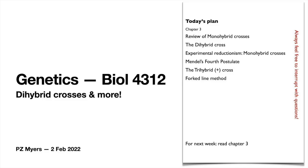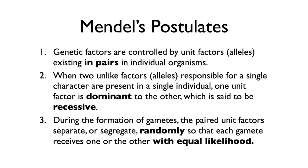Here's where we are. Last time we talked about monohybrid crosses. It's a really simple Darwinian method of looking at the genotype and phenotype of organisms. And we went through Mendel's postulates. They look kind of wordy, but trust me, once you figure these things out, you'll discover Mendelian genetics is really, really easy. It's about the simplest kind of genetics we've got.